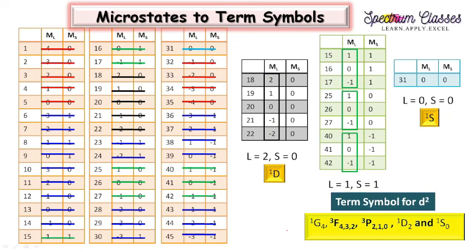This is how you can write down the microstates for D2 configuration and easily assign term symbols and the ground state term symbol. If you find this video helpful, please subscribe to my channel, like this video, and share it among your friends. Thank you all, thanks for watching.